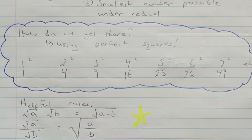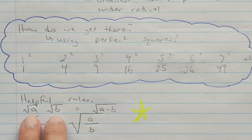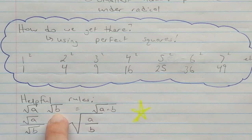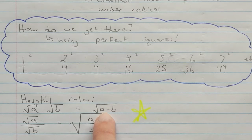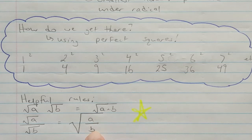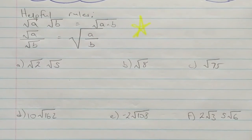We also have two helpful rules. The first rule says that if you have two radicals multiplied by each other, it is the same thing as having one large radical with the two numbers underneath it — so √a × √b = √(ab). Similarly, √a ÷ √b = √(a/b). Those are the two rules we are going to be working with and applying in examples.